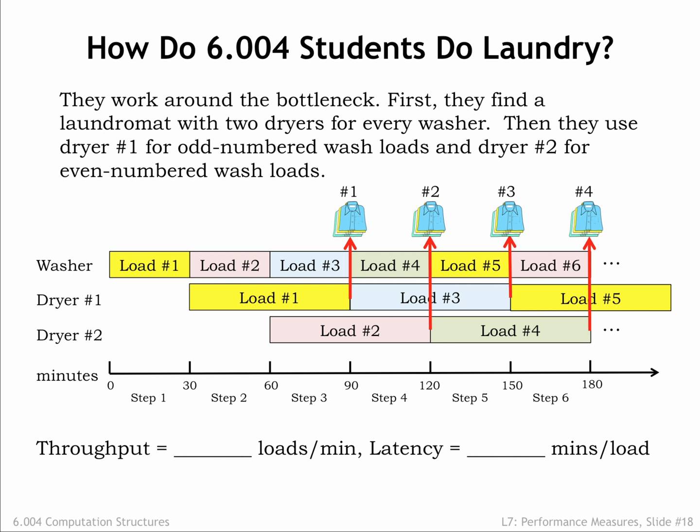The steady-state throughput is 1 load of laundry every 30 minutes, and the latency for a particular load of laundry is 90 minutes. Here is the take-home message from this example. Even though the component dryers themselves aren't pipelined, the two-dryer interleaving system is acting like a two-stage pipeline with a clock period of 30 minutes and a latency of 60 minutes. By interleaving the operation of two unpipelined components, we can achieve the effect of a two-stage pipeline.